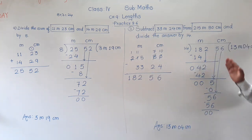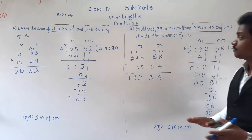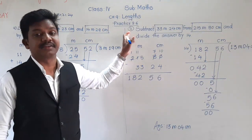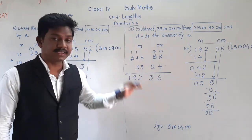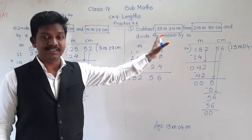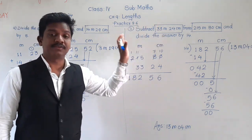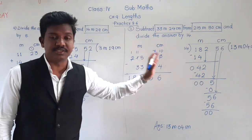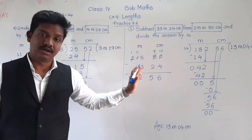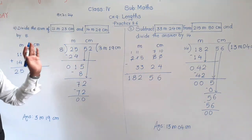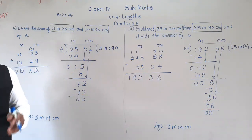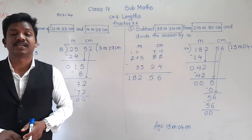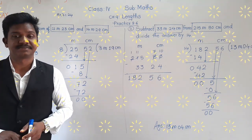So in this way we solve these questions. Question 9 and question 11 we have done together. Question 12 is the same as question 11 — subtract the two lengths and divide the answer by the given number. Follow this procedure and method. Write both the remaining questions in your notebook and solve questions 10 and 12 as homework. Thank you for today and have a nice day.